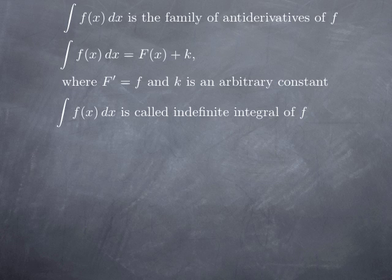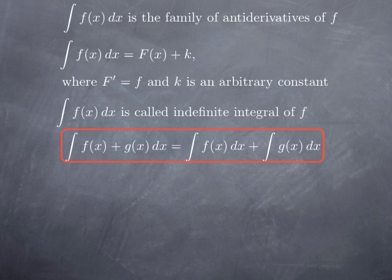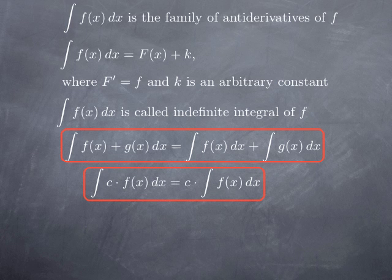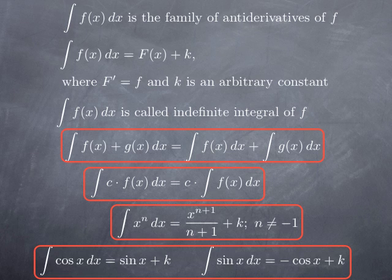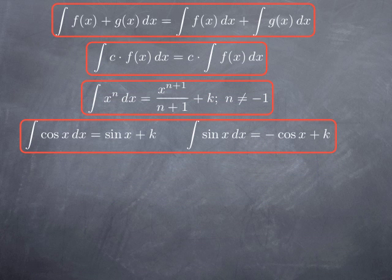With this notation at hand, we can rephrase the rules. The integral of a sum is the sum of the integrals. The integral of a constant multiple of a function allows pulling the constant out of the integral sign. The power rule for antiderivatives states: the integral of x to the n is x to the n plus 1 over n plus 1, plus a constant — valid for any n not equal to negative 1. The integral of cosine x is sine x plus k, the integral of sine x is negative cosine x plus k, and the integral of secant squared x is tangent x plus k, since the derivative of tangent is secant squared.